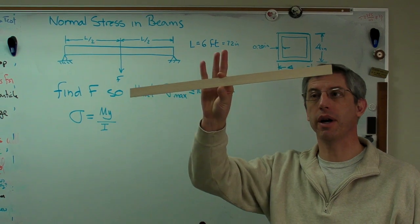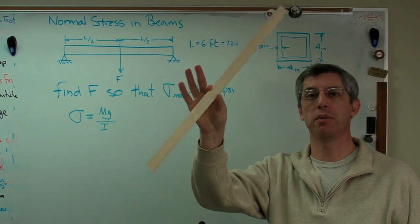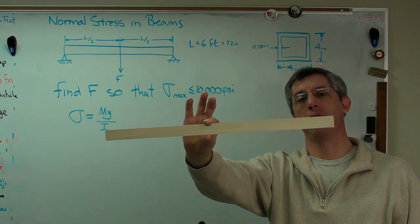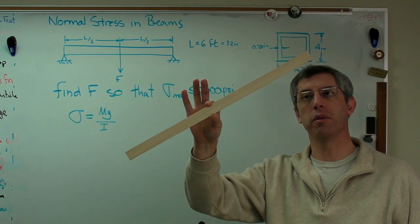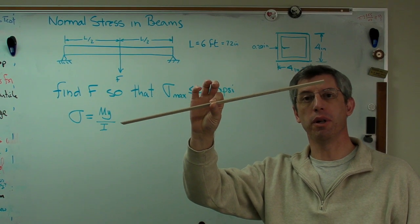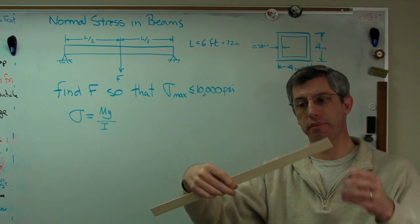As an example here, I've got what amounts to something like a ruler. I've got the dimensions written on the back. It's 27 millimeters wide. It's four millimeters thick.